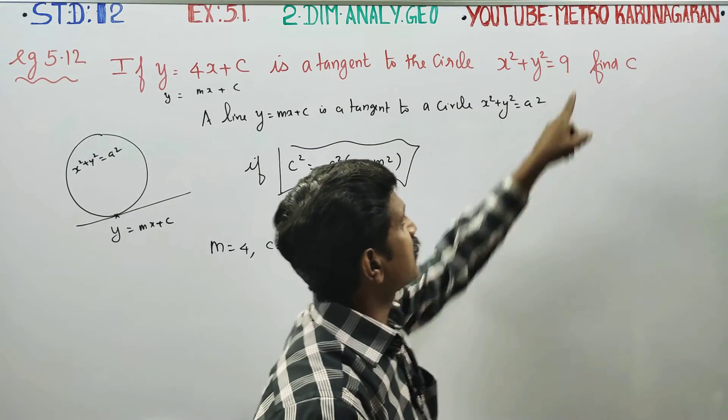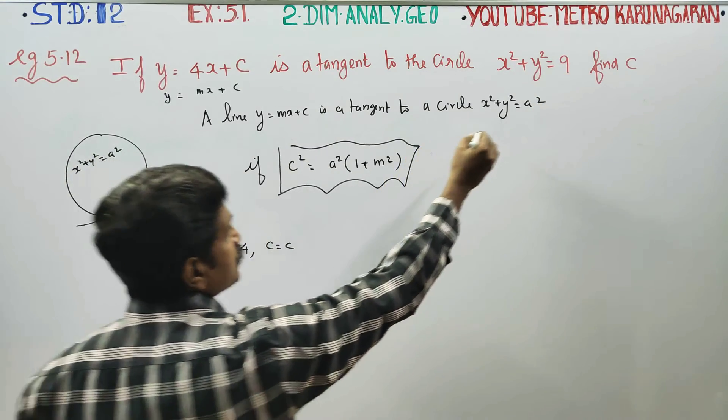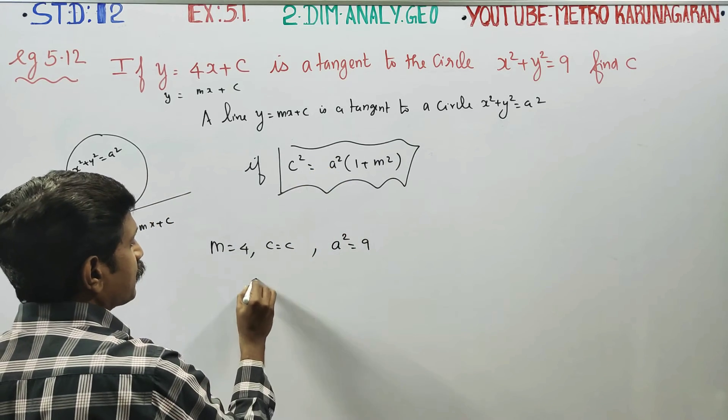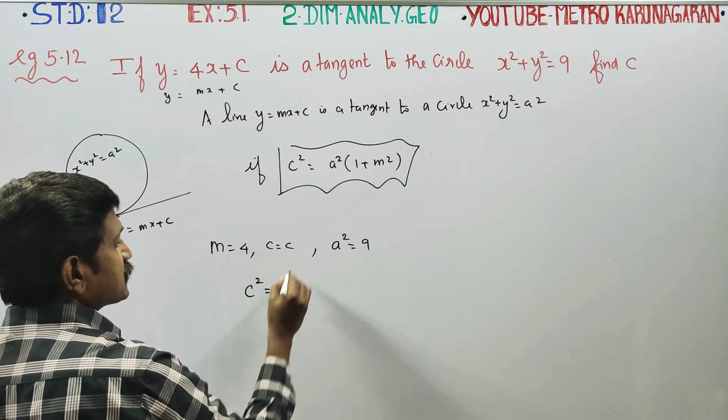a square is 9. Since x square plus y square is equal to a square, a square is equal to 9. Just substitute here and you can find the value of c. A square is 9.